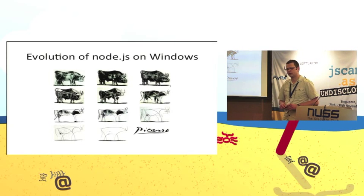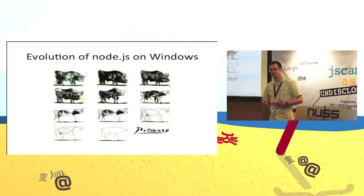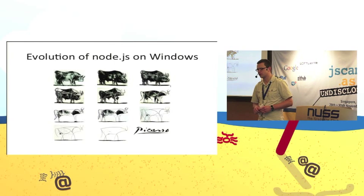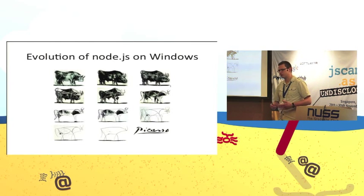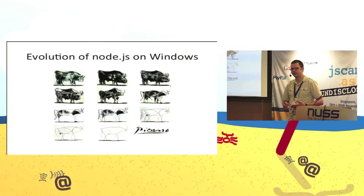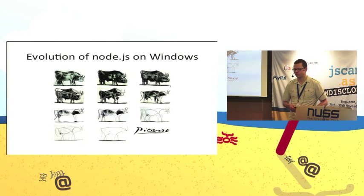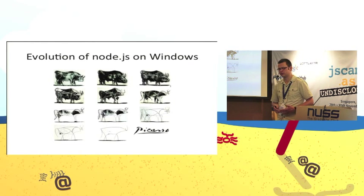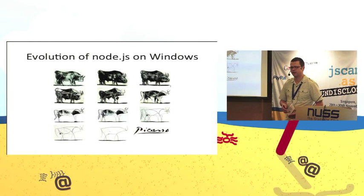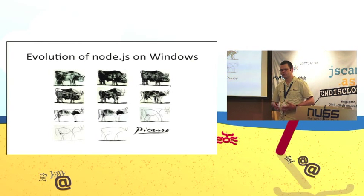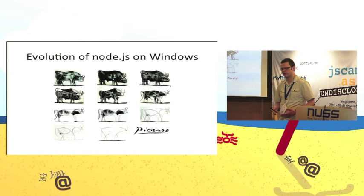A year later, in 2010, Joyent, the official sponsor of the Node.js project, and Microsoft joined forces to make sure that the Windows implementation uses native mechanisms on Windows and is on par performance-wise with the Linux implementation. As a result, the Cygwin layer was completely replaced with a native implementation calling down to Win32 APIs. The 0.6 version of Node.js was the first to support Windows natively. Ever since then, Node.js evolves in lockstep across all supported platforms — Windows, Unix, and Mac.